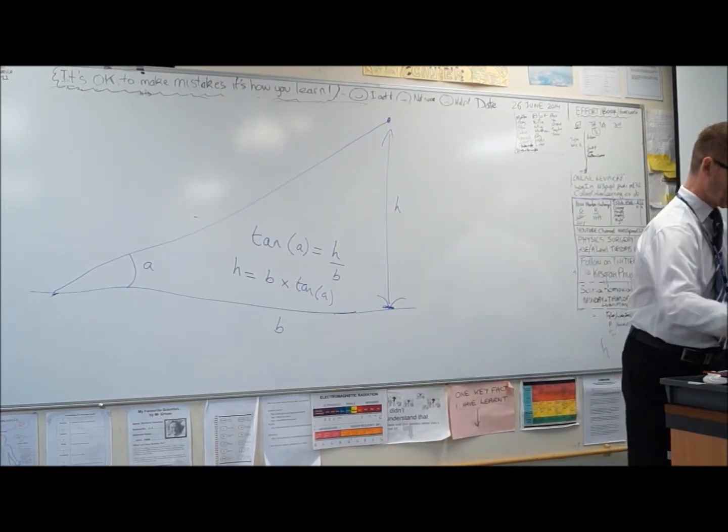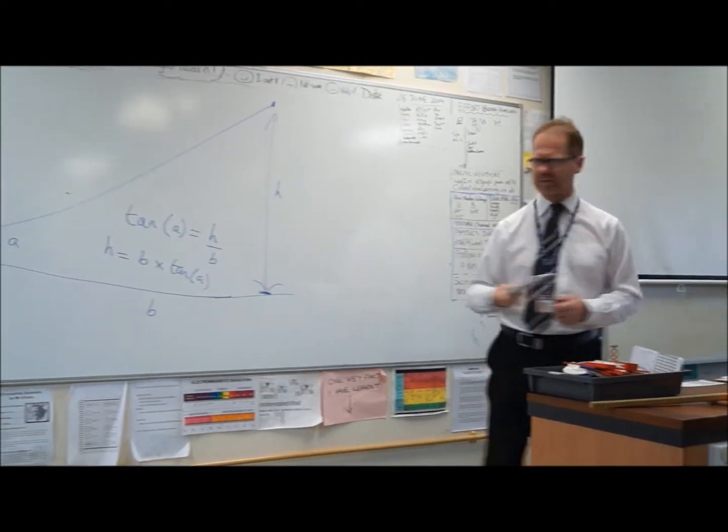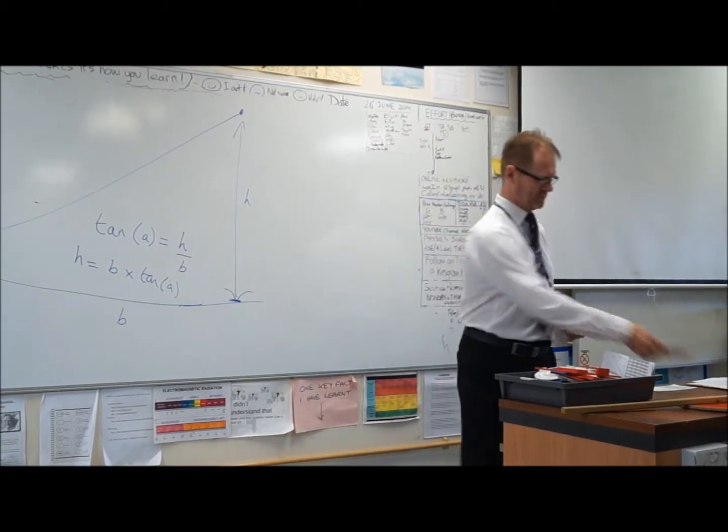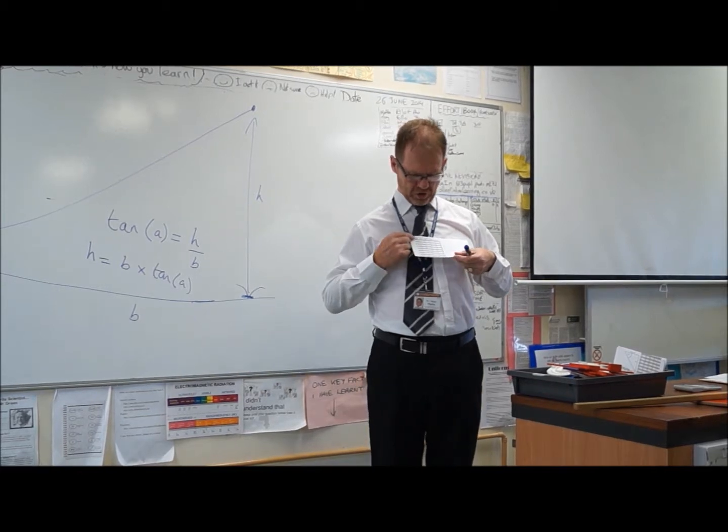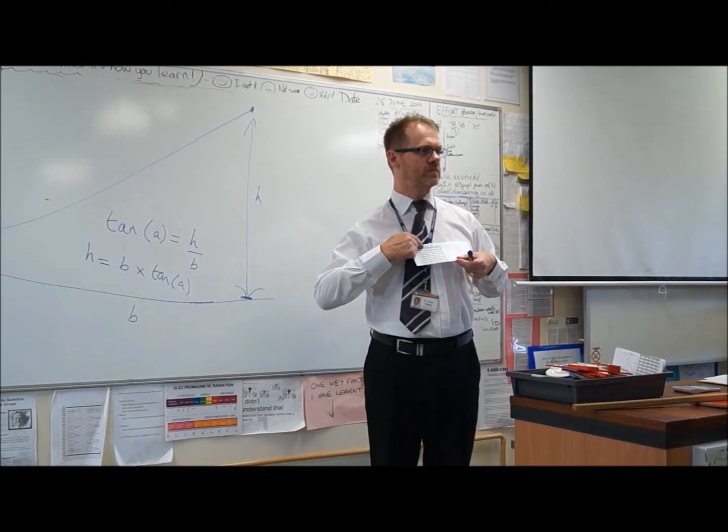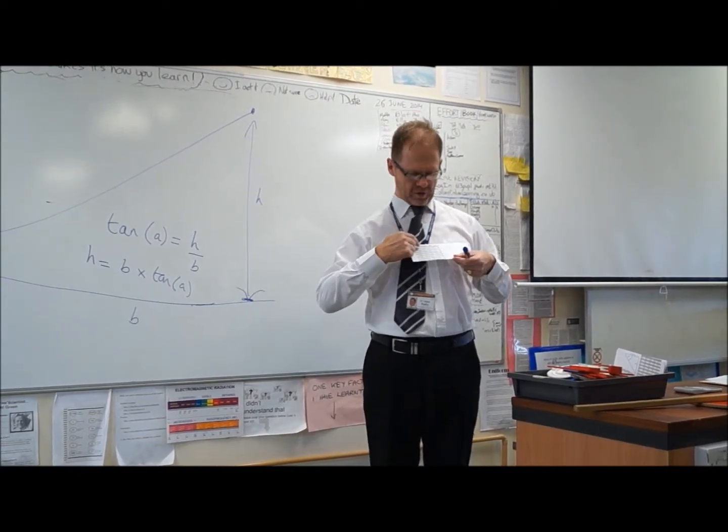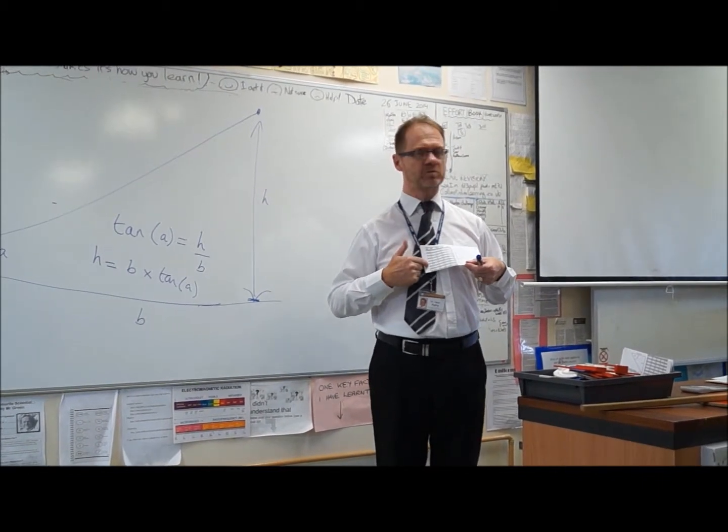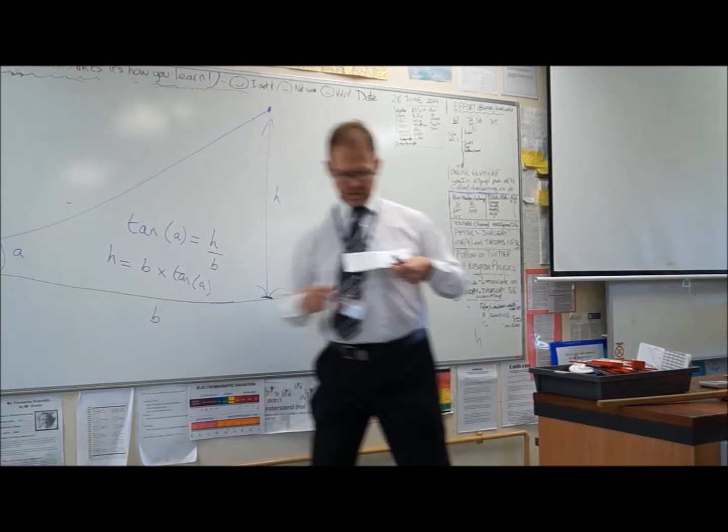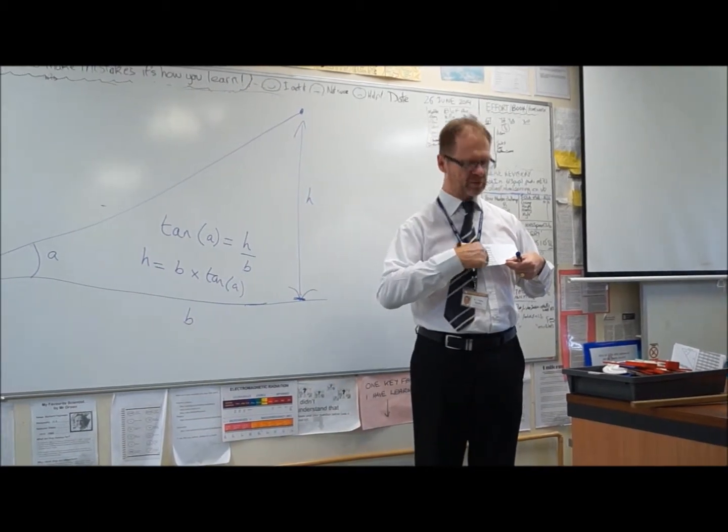For those people that don't want to use a calculator or can't remember the formula, I've got a little lookup table. So literally, you look for where you're stood, how far away from the rocket launch are you. So I've got 50 metres, 100 metres, 150 metres. What angle did I read? And this will tell you the rocket height.